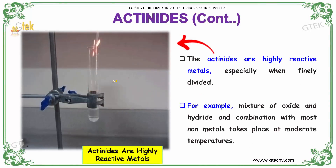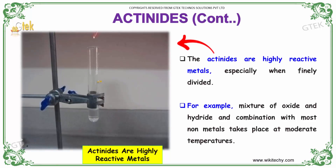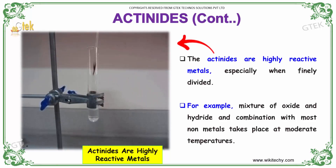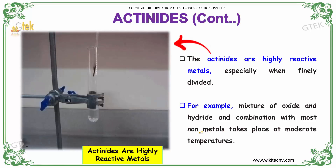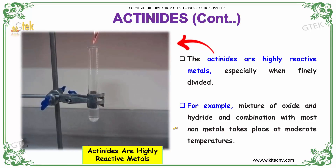The actinides are highly reactive metals, especially when finely divided. For example, mixtures of oxide and hydride, and combination with most non-metals, takes place at moderate temperatures.